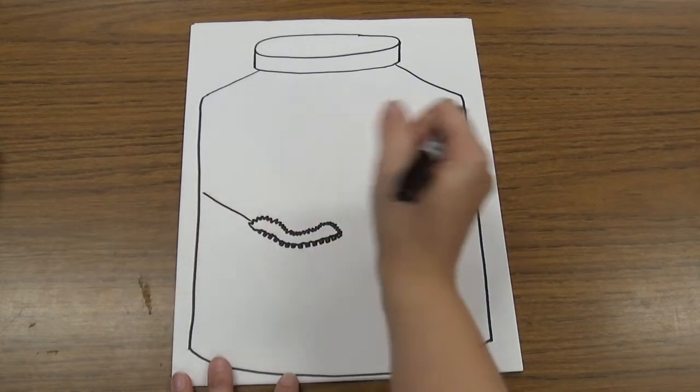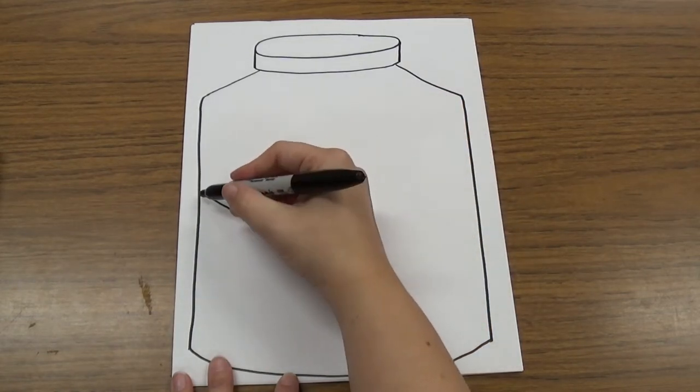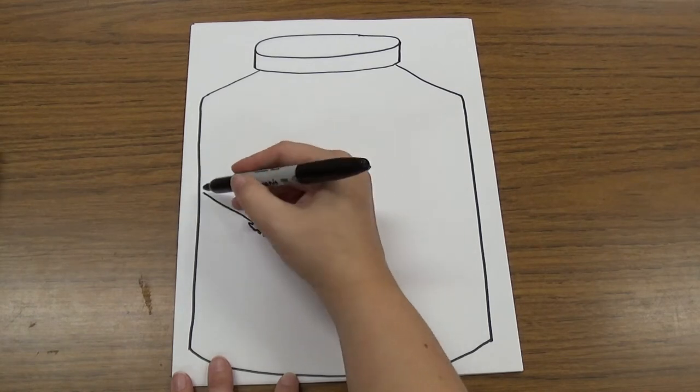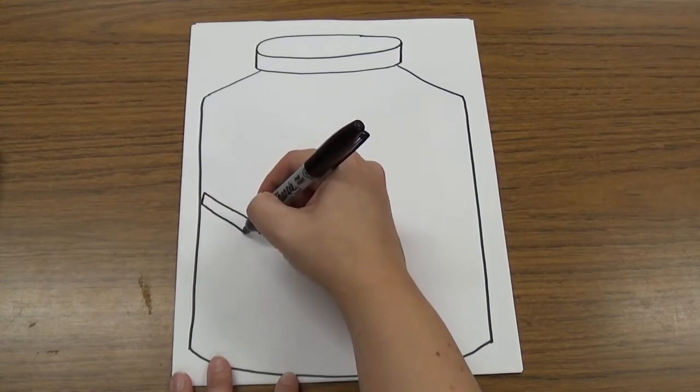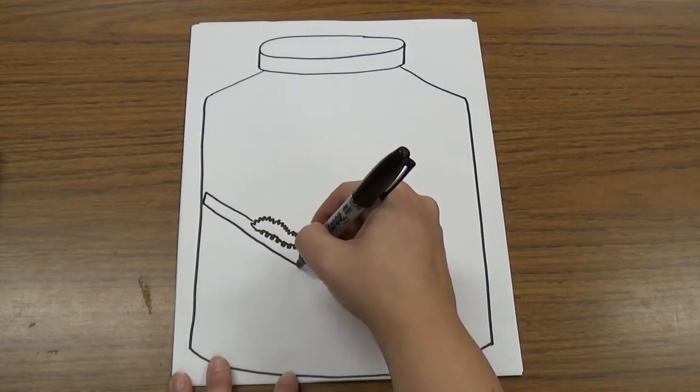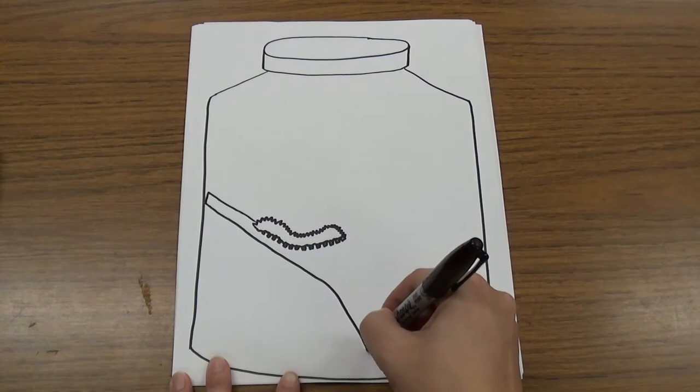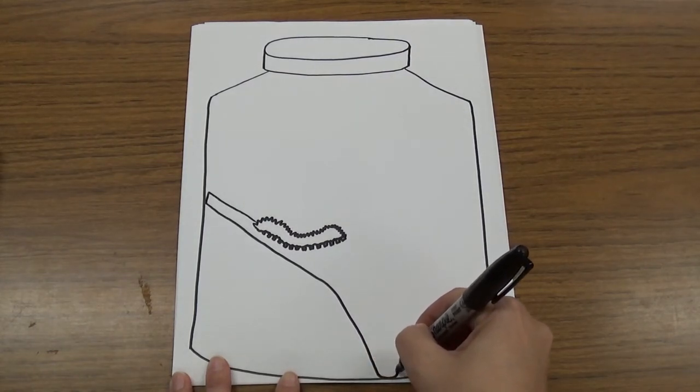I know this is the edge of my jar, so the stick can't go outside because it wouldn't go through. I'm going to make it leaning against the side of the jar. It's going to come down and curve, touching the bottom but not going outside the jar.